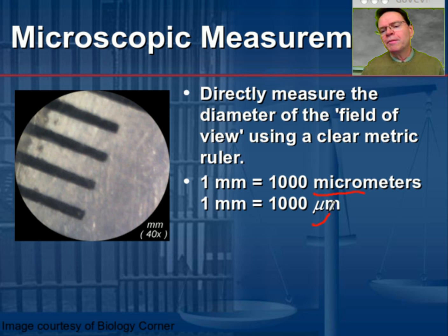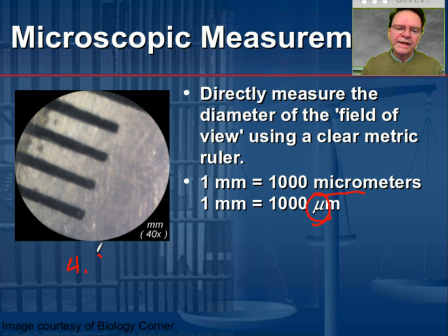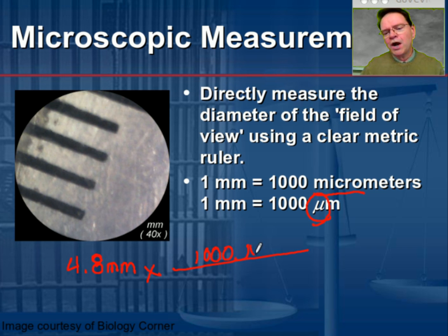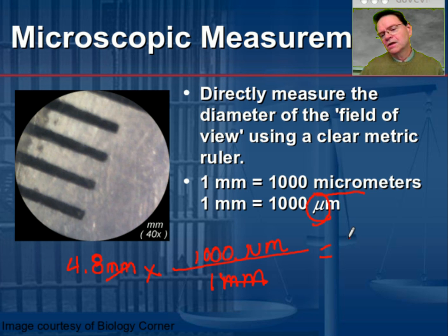We'll typically use micrometers rather than millimeters because they let us drill down to a smaller order of magnitude. The abbreviation for a micrometer is the Greek letter mu (μ). Using dimensional analysis, 4.8 millimeters times 1,000 micrometers per millimeter gives 4,800 micrometers — a large number, but keep in mind micrometers are one millionth of a meter, so these are really very small measurements.